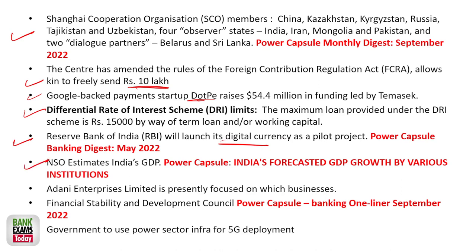NSF data comes from GDP — this is really important. GDP questions are expected every year, that is really important. Adani Enterprises is a question like this year. Financial Stability and Development Council — directly banking awareness — was popular at that point in time.